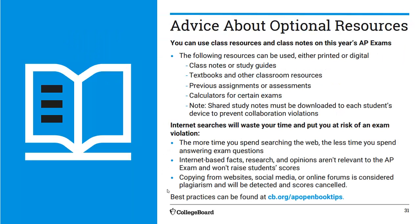The AP says don't waste time looking stuff up on the internet — you should know this stuff. You know a lot of physics, so if you're looking things up, you're losing time. They're checking for plagiarism and running answers through plagiarism detection, which is another reason they prefer you type and submit. Time looking up stuff is time you're not working on the test.